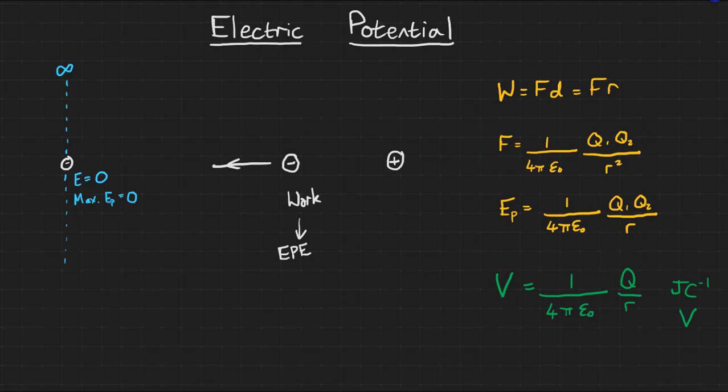You can calculate the work that must be done to move a charged particle from one potential to another, using the equation, change in work delta W, is equal to the charge, multiplied by the change in the electrical potential, or the potential difference, between the two points. As you can see, if the change in potential, the potential difference, is zero, the work done is also zero.